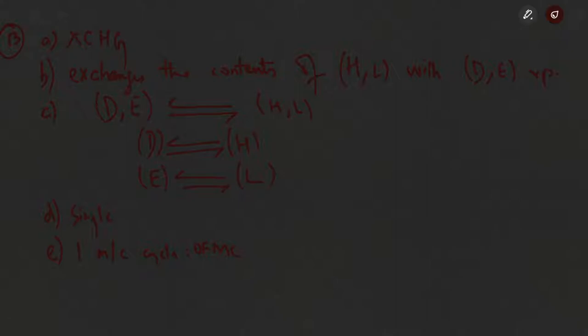XCHG has 4 T-states and an execution time of 1.28 microseconds. There are no variations. No flag is affected. The addressing mode for both source and destination is implied, since both are implied in the instruction. The micro RTL consists only of the opcode fetch machine cycle.